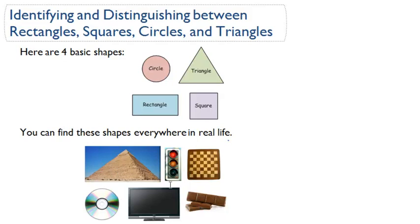If you look at a traffic light, the outside of a traffic light is made up of a rectangle, and the actual lights on the traffic light are made up of circles. So you can see, these four basic shapes are found everywhere.